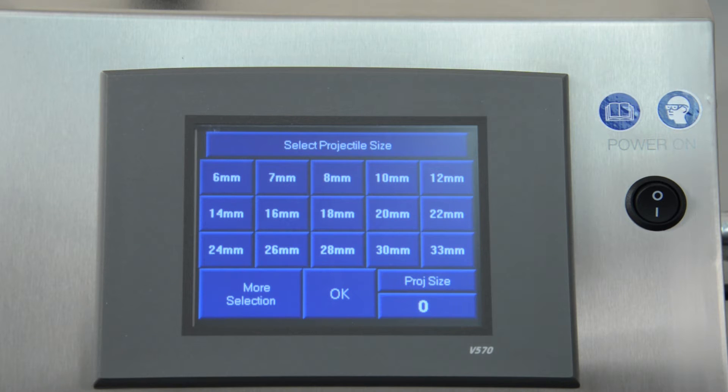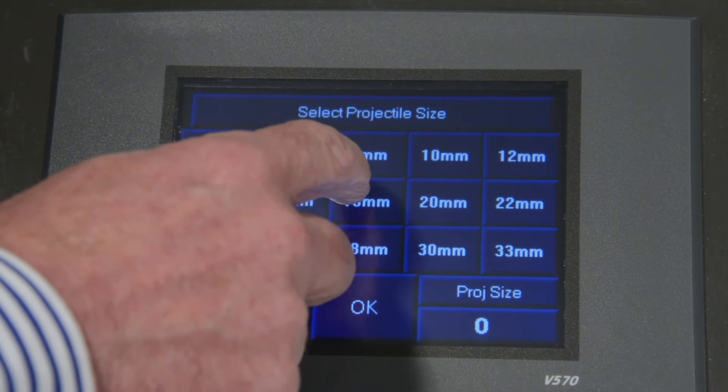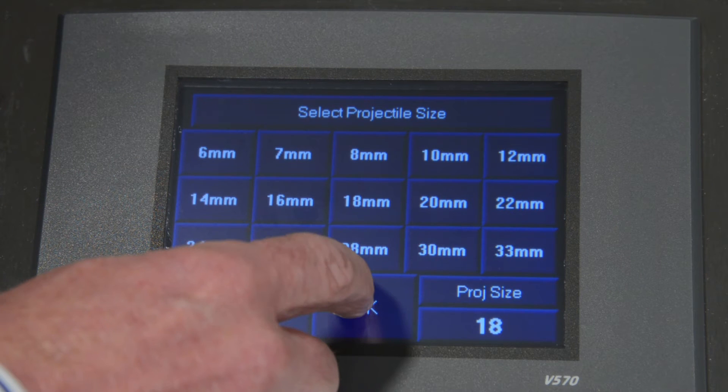You will now be prompted to select the projectile size that you want to use. Be sure to refer to the UltraClean recommended sizing charts to select the correct projectile size for your application. Enter the projectile size that you wish to use and press OK.